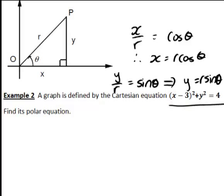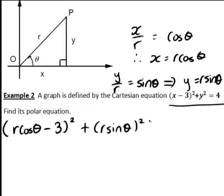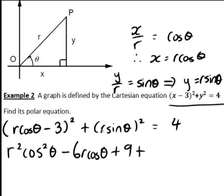We can substitute those into this equation, so that we get r cos theta minus 3 squared plus r sine theta squared equal to 4. Expanding these brackets and simplifying we would end up with r squared cos squared theta minus 6 r cos theta plus 9 plus r squared sine squared theta equals 4.